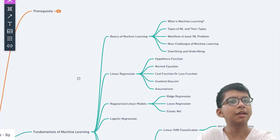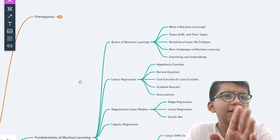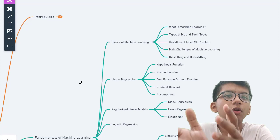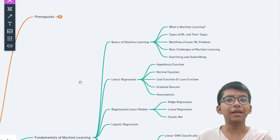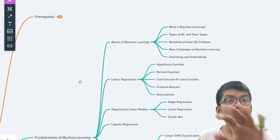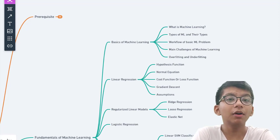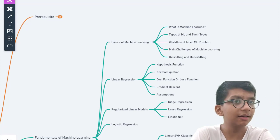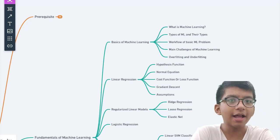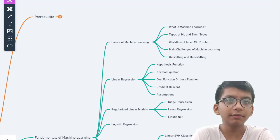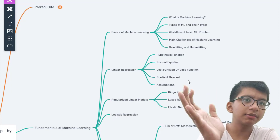After covering prerequisites, it's time to get into the fundamentals of machine learning — do not skip this part. A strong base is very important. Start with the basics of machine learning: what is machine learning, what are its types, what is the workflow, what is a basic machine learning problem, what is the hypothesis space, best practices, main challenges like overfitting and underfitting, and regularization.